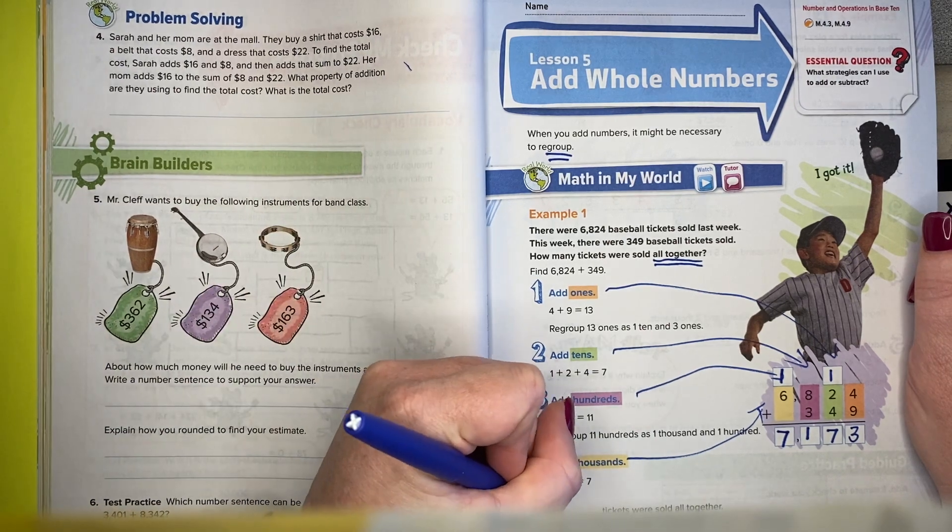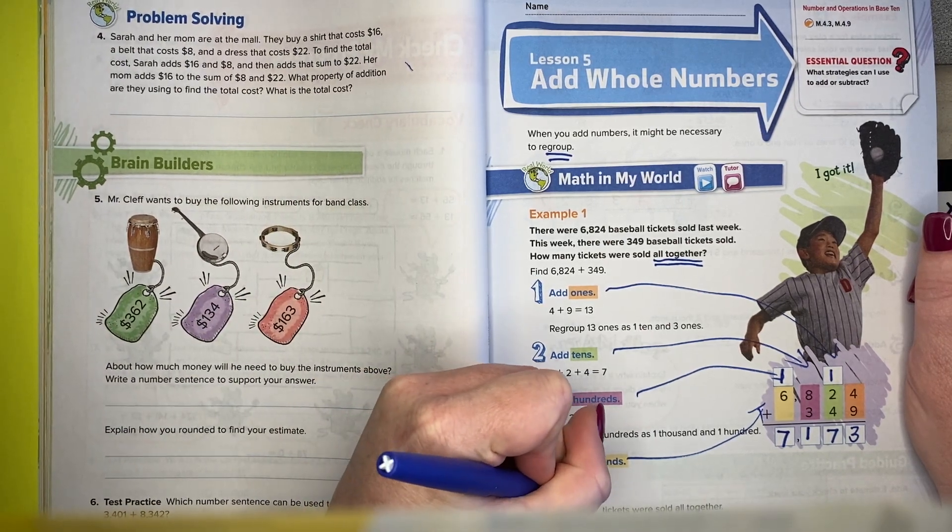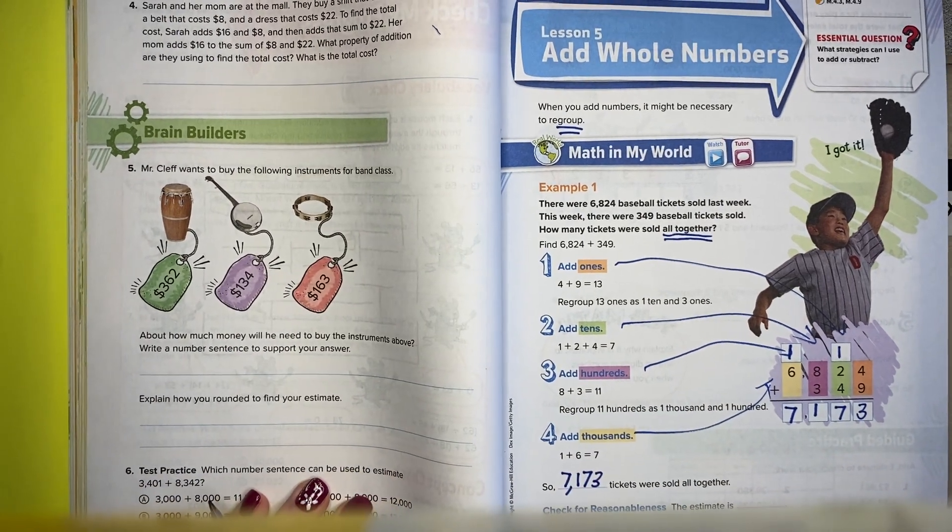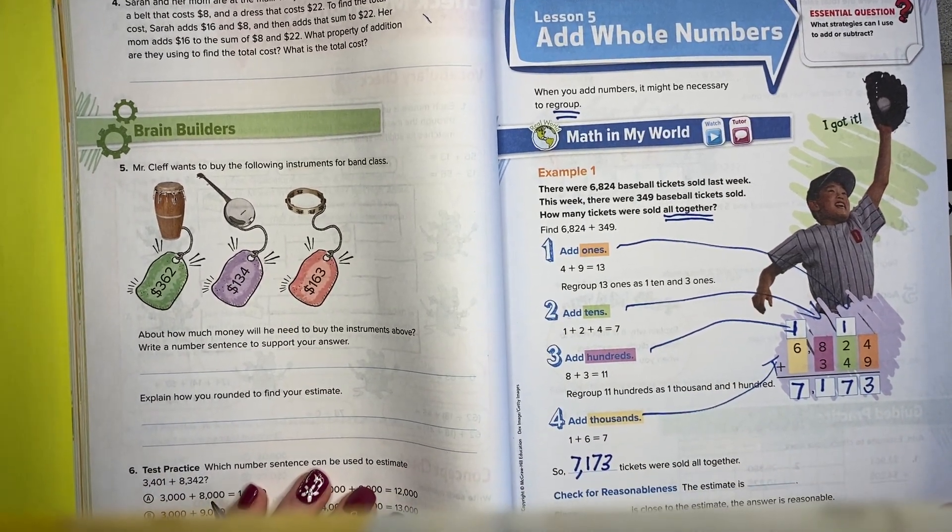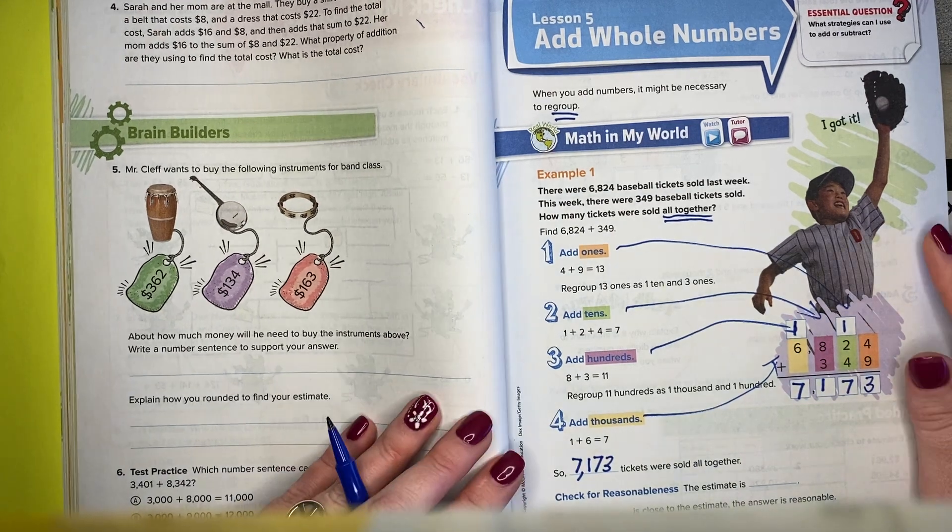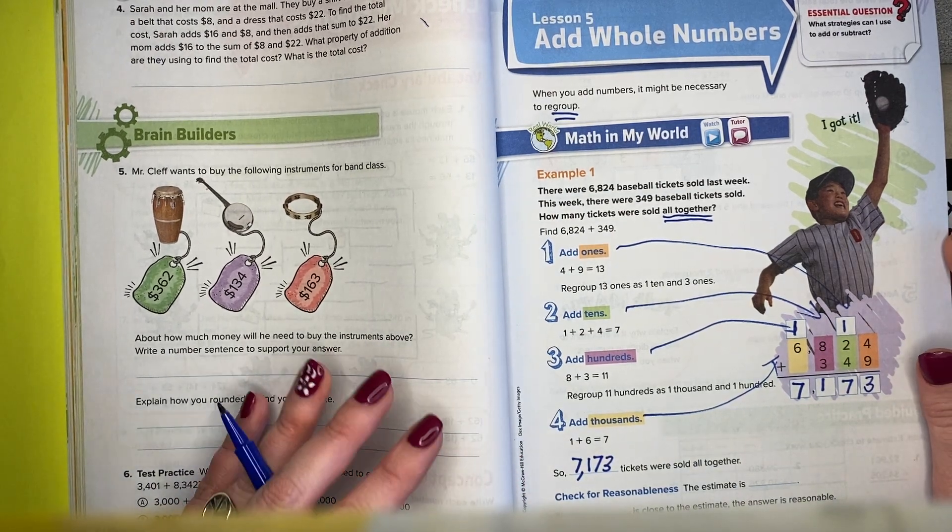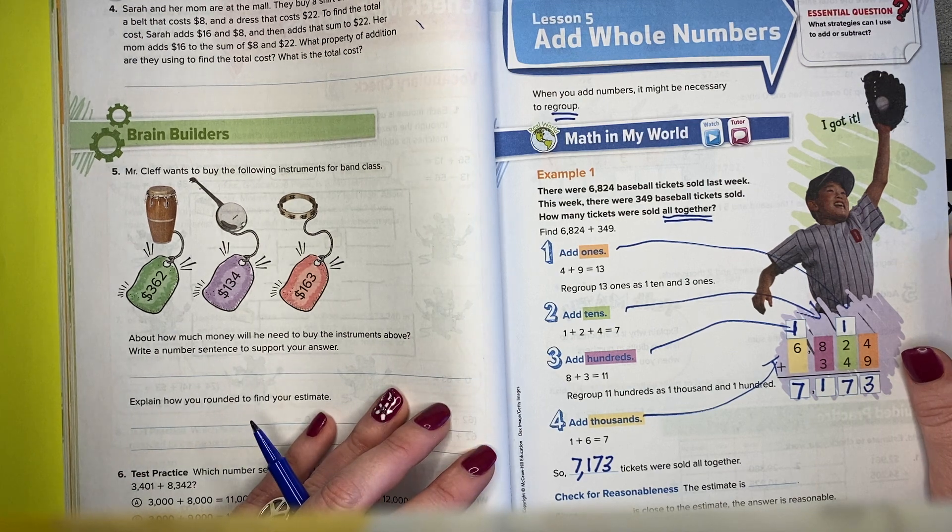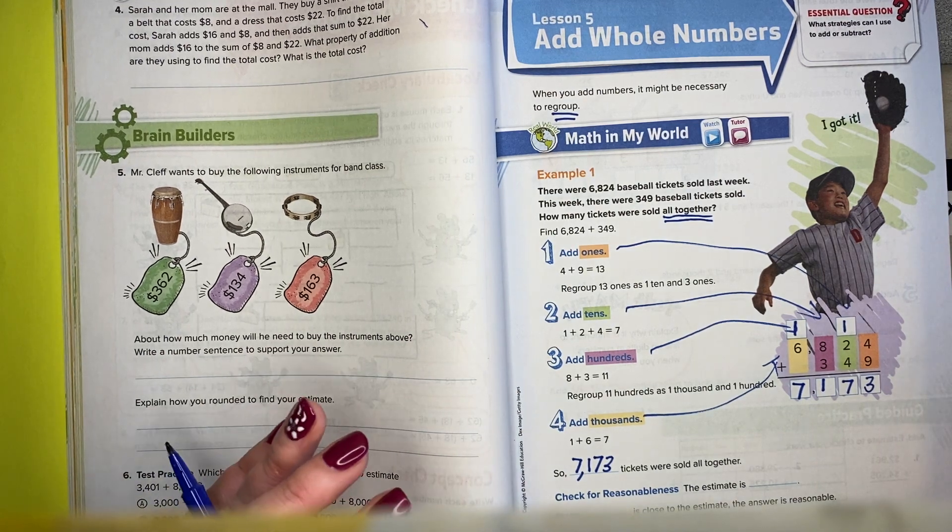So 7,173 tickets were sold all together. Let me move up, you can't see everything. It says check for reasonableness. So here is a reason why we would be doing those estimations. We're going to estimate.